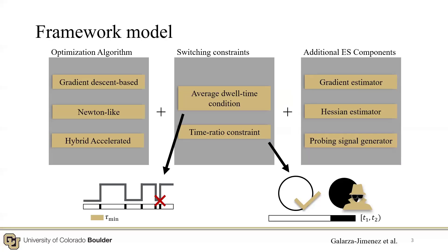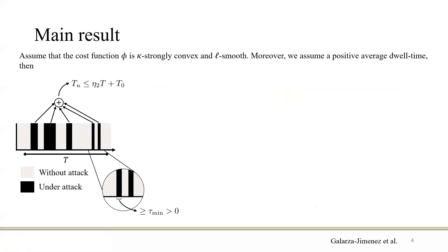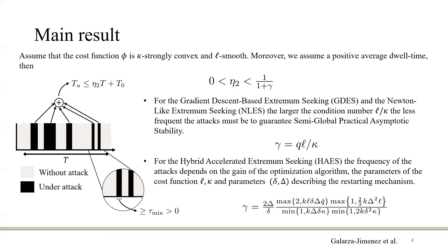The Extremum Seeking scheme adds derivative estimations by means of a probing signal in the input of the cost function phi. Our main result establishes a condition on the total activation time of the system under attack. Assuming the cost function phi is strongly convex and l-smooth, and assuming a positive dwell time, if we upper-bound eta2 appropriately, then for the gradient descent-based and Newton-like Extremum Seeking, the larger the condition number l over kappa, the less frequent the attack must be to guarantee semi-global practical asymptotic stability. For the hybrid accelerated version, the frequency depends on the gain, parameters l and kappa, and the delta parameters of the probing mechanism.